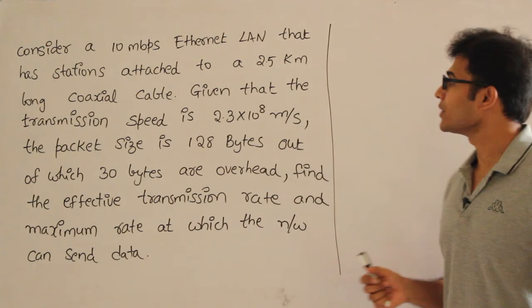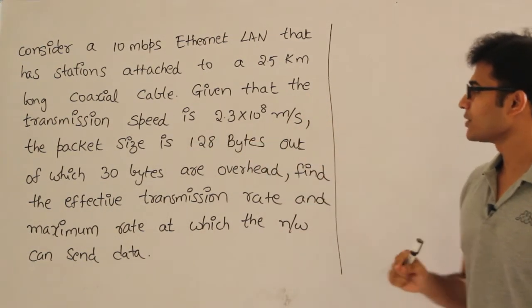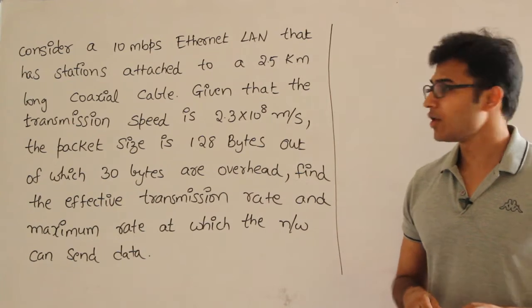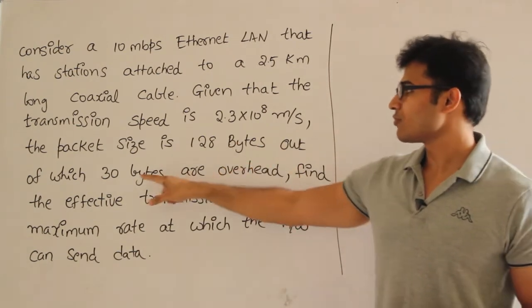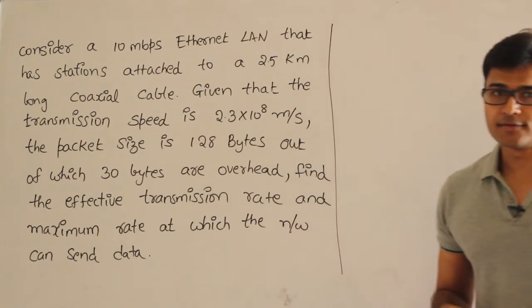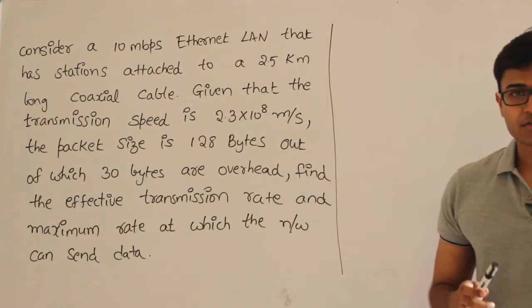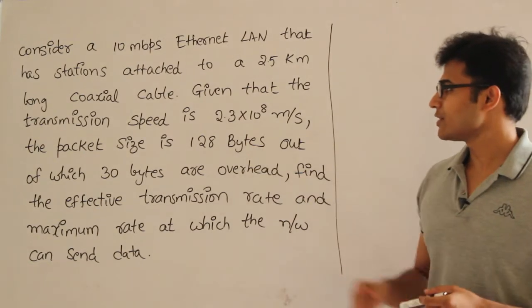The LAN spans 2.5 km. Given that the transmission speed is 2.3 × 10^8 m/s (this is the velocity), and the packet size is 128 bytes, out of which 30 bytes are overhead. Overhead is nothing but the header size—whatever is not data is overhead.